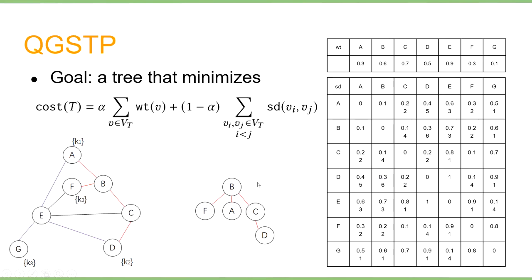By reducing the vertex-weighted Steiner tree problem to QGSTP, we prove QGSTP is NP-hard. So in this paper, we focus on designing efficient approximation algorithms for QGSTP.